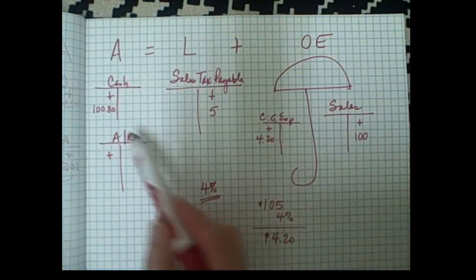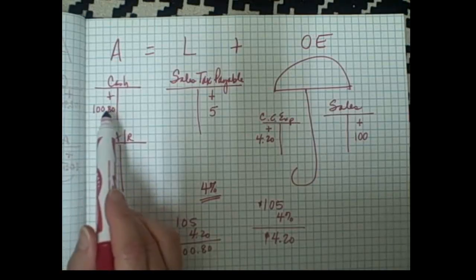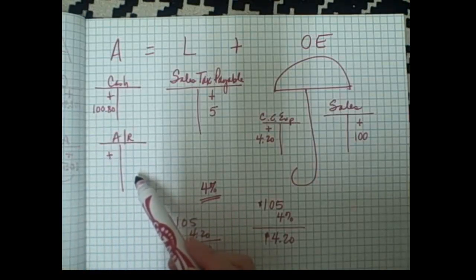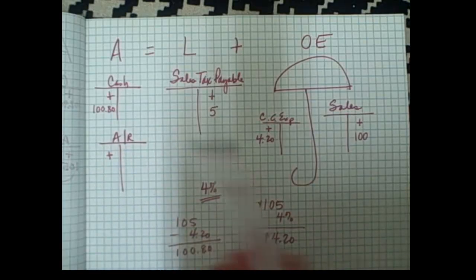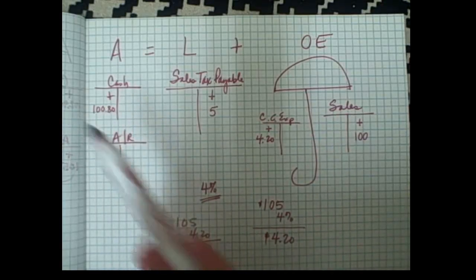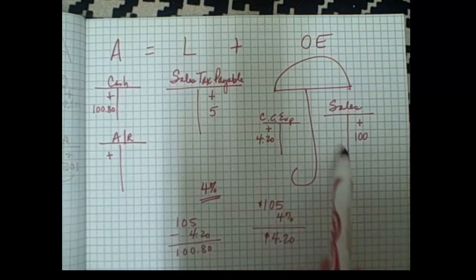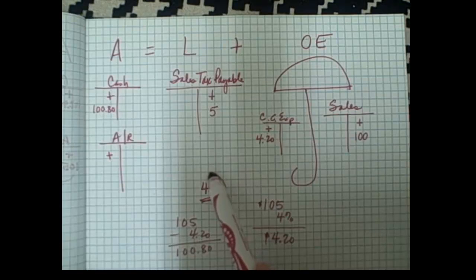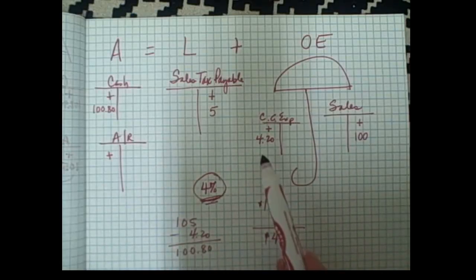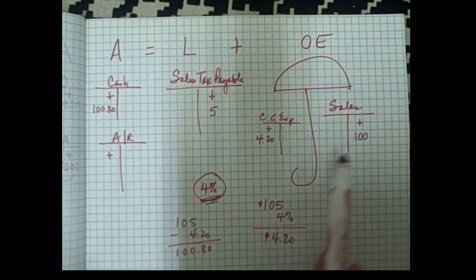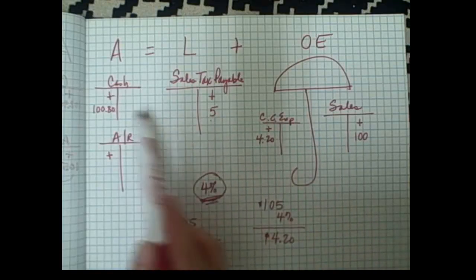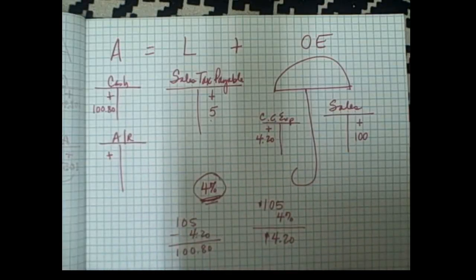So instead of collecting the full cash amount, we subtract the four dollars and twenty cents — giving us a hundred and five dollars minus four twenty, which is $100.80 in cash. Most businesses say this is well worth it, because it's cash going into their account at the end of the day. They don't have to deal with collections, offer discounts, worry about bad checks, or worry about non-sufficient funds, because the credit card company has assumed the risk. So it's well worth paying that four percent. The credits and debits still equal each other, so everything is fine.